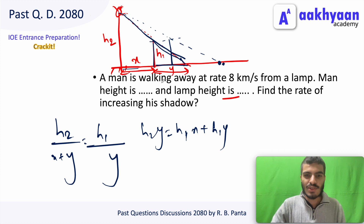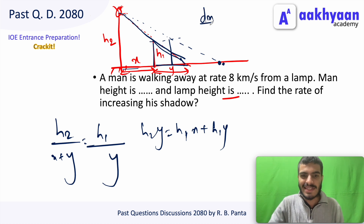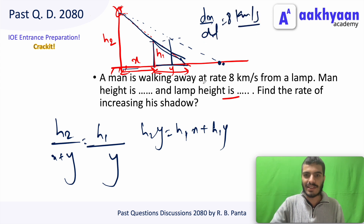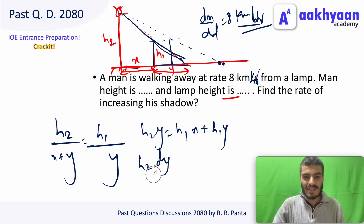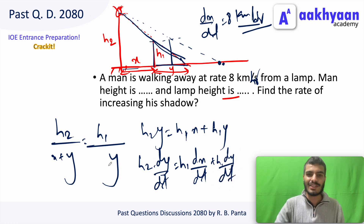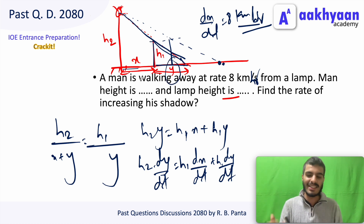Now differentiating with respect to time: dx/dt = 8 km per second. Differentiating both sides gives s2 × dy/dt = h1 × dx/dt + h1 × dy/dt. Solving for dy/dt gives the rate of increase of the shadow fundamentally.